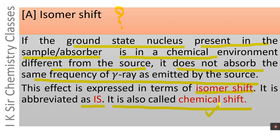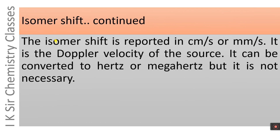The isomer shift is expressed in centimeters per second or millimeters per second. It is the Doppler velocity of the source relative to the sample or absorber. It can be converted to hertz or megahertz, but this is generally not necessary.